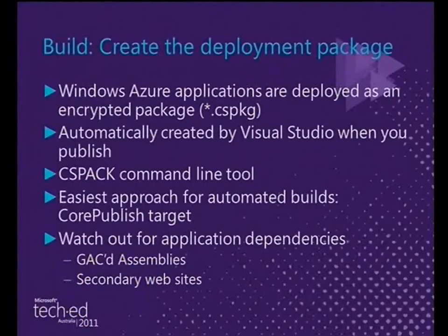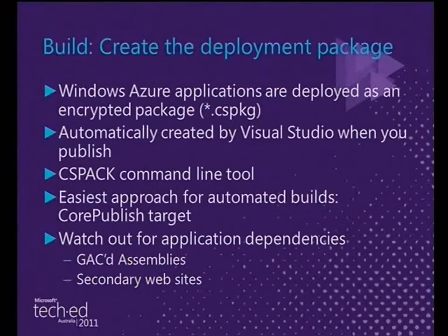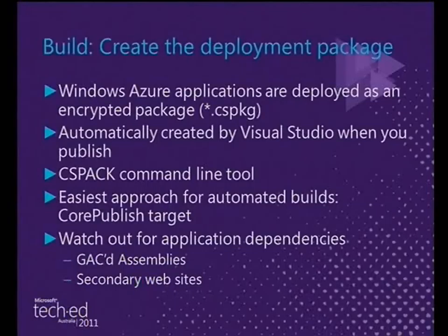Once you've compiled and modified your configuration, the next step is building the package file. When you use Visual Studio as a single developer and right-click to publish, you never see this package file. Under the covers, a console application called CSPack takes all the files and creates an encrypted .cspkg file. You can call CSPack yourself, but an easier approach is to use the MSBuild target called CorePublish — it's badly named because it doesn't actually publish anything, it just packages. CorePublish is a wrapper over CSPack and is easy to integrate with your MSBuild scripts.